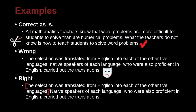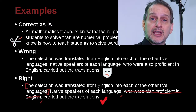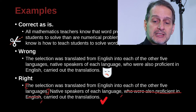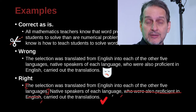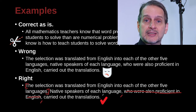'Native speakers of each language, who were also proficient in English, carried out the translations.' Here we have a comma before and a comma after. If we take out that middle part, can this be a whole sentence? 'Native speakers of each language carried out the translations.' Yes, that can be a whole sentence. So that's a good example of a non-restrictive adjective clause — we need a comma before and a comma after, because the sentence still makes sense and still has the same basic idea.